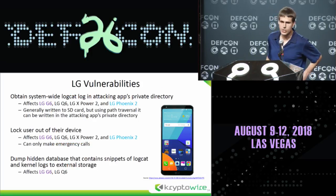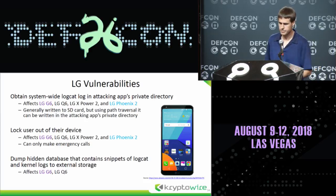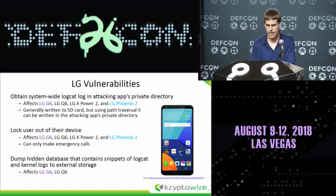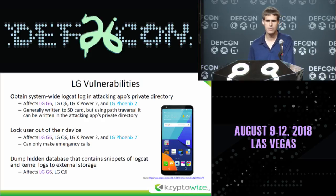Moving on and switching to LG, we have some vulnerabilities here. You can also obtain the system-wide logcat log — except this time you can get it written to the attacking application's private directory, so you don't need any permissions. It's generally written to the SD card but you can use path traversal. You can also inject a parameter argument to the command being executed to get all of the logs. You can also lock the user out of their device.